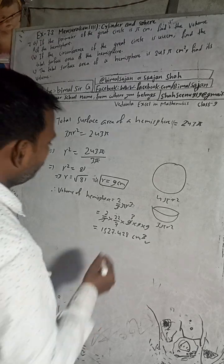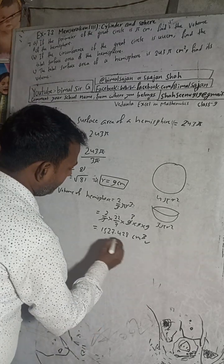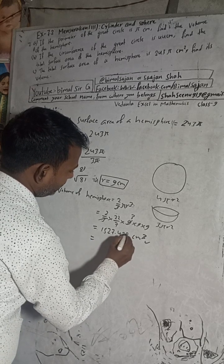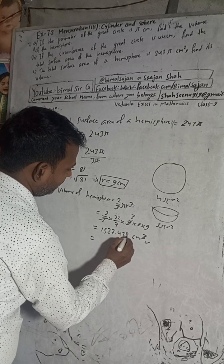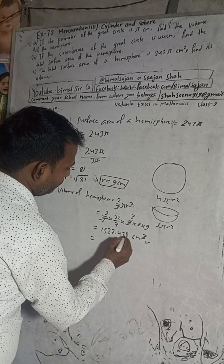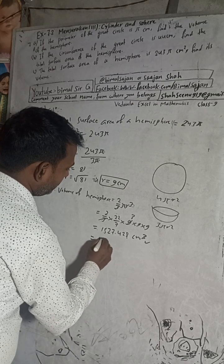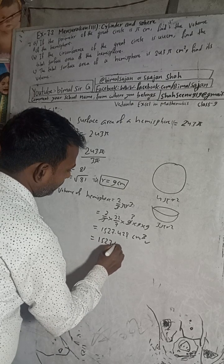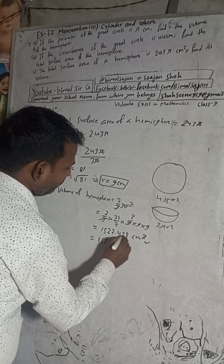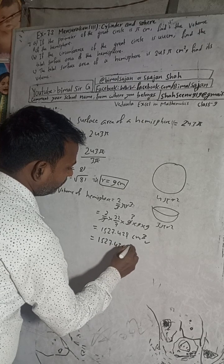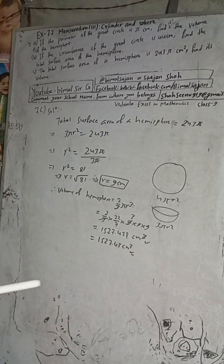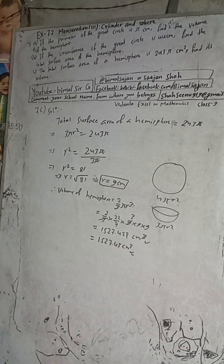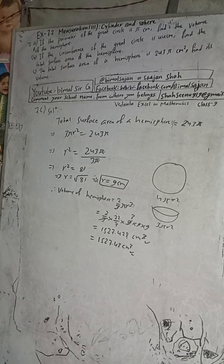Since the digit after the third decimal place is greater than 5, we round up, giving a final answer of 1527.43 cm cubed.